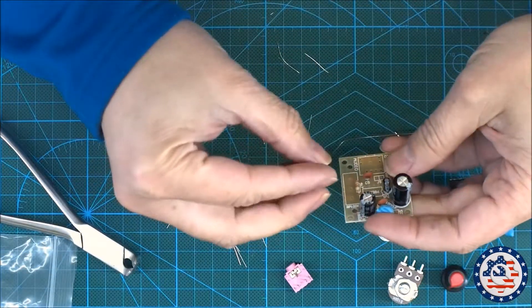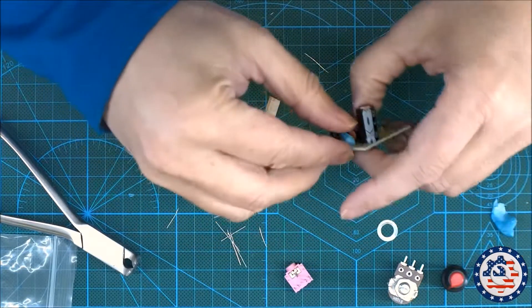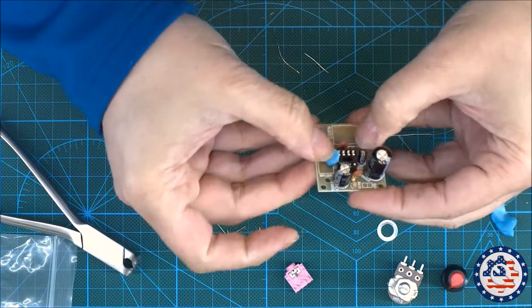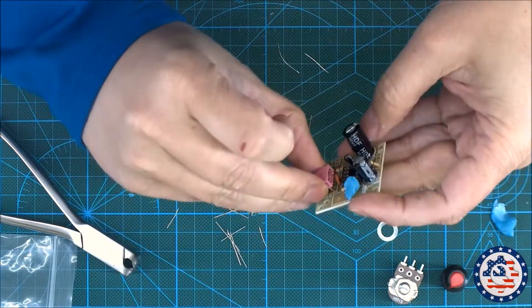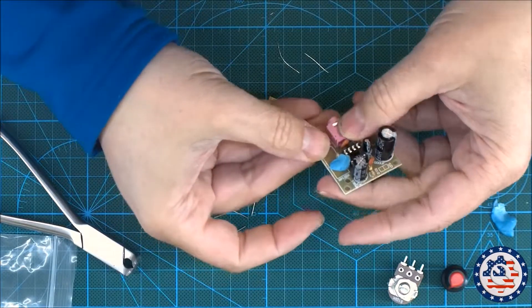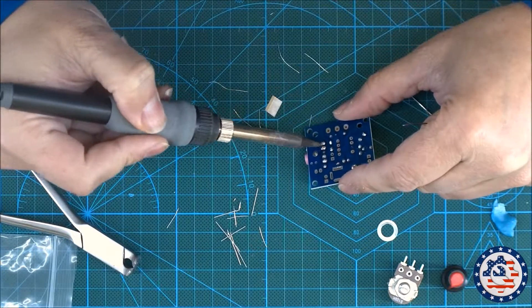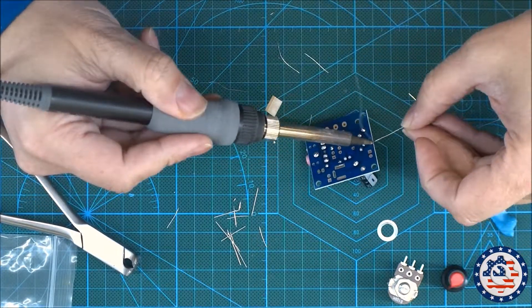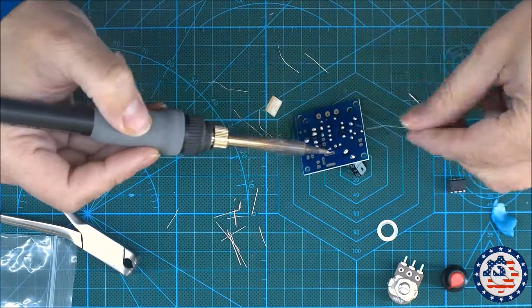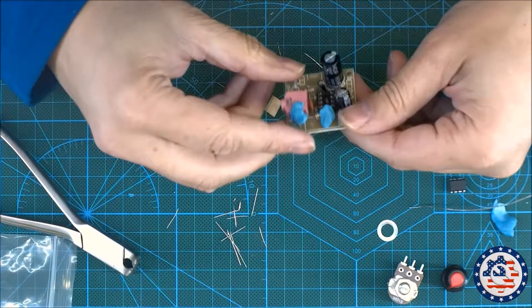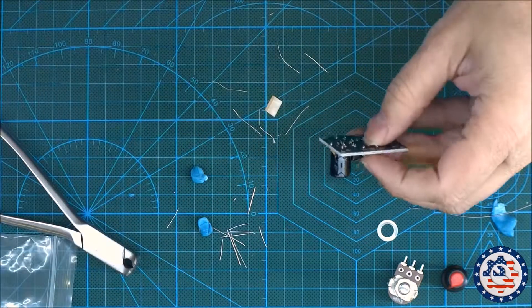Let's do the socket and then I'll do the audio jack as well. Put the audio jack in. Now the resistor is not sitting very well, so I'm just going to adjust it.